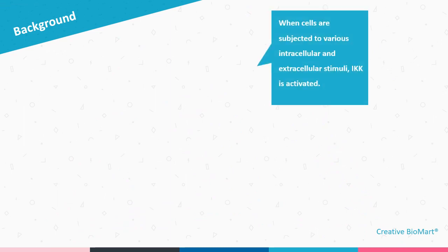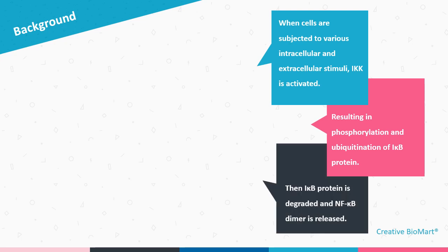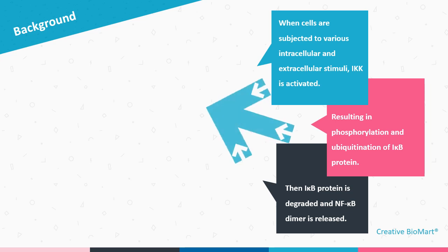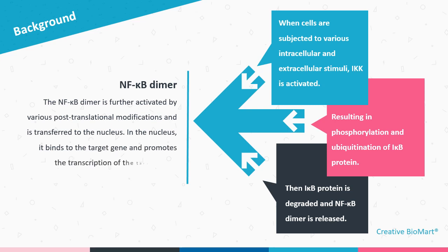When cells are subjected to various intracellular and extracellular stimuli, IKK is activated, resulting in phosphorylation and ubiquitination of I-Kappa-B protein. I-Kappa-B protein is then degraded and NF-Kappa-B dimer is released. The NF-Kappa-B dimer is further activated by various post-translational modifications and transferred to the nucleus, where it binds to the target gene and promotes transcription.